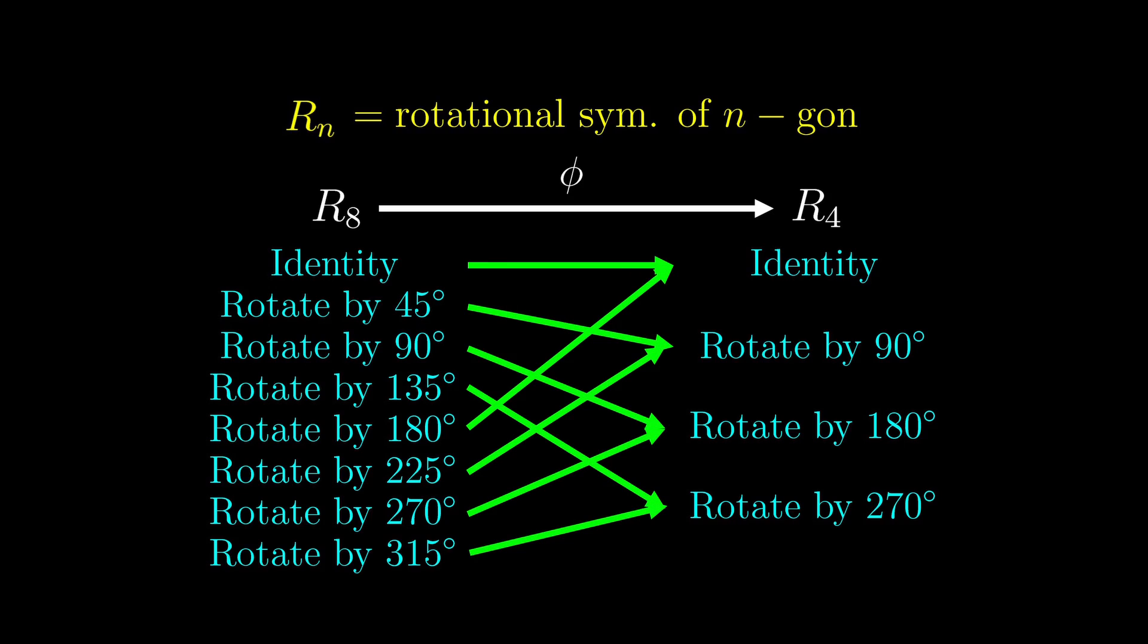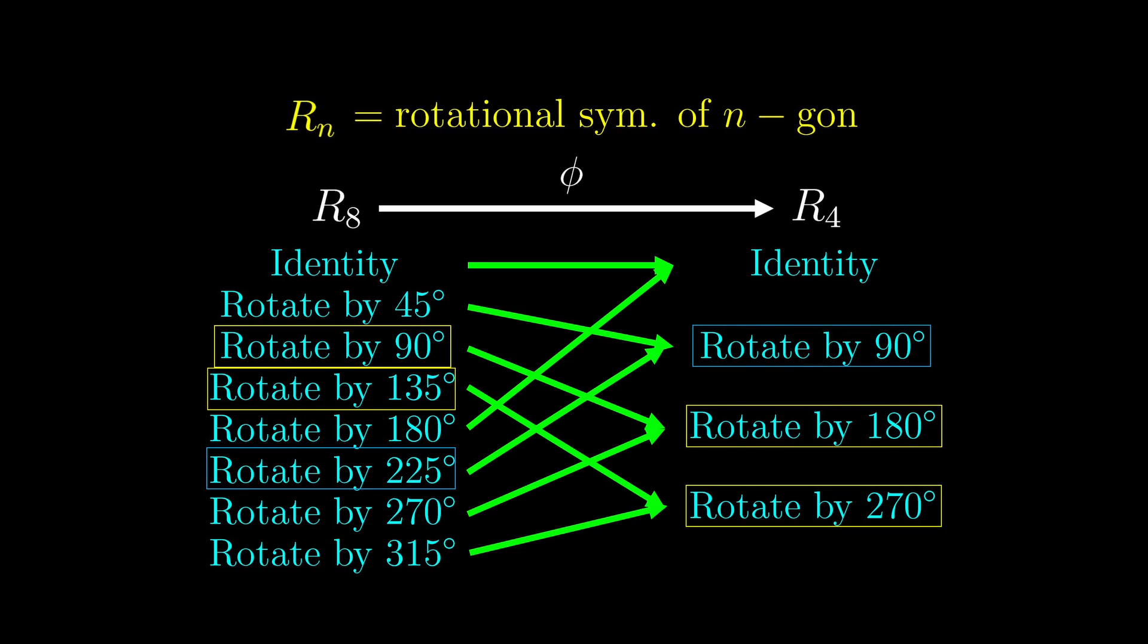Just to convince you that this is indeed a homomorphism, we consider this particular pair of symmetries. The result of these two symmetries should be a rotation by 225 degrees. Now apply the function phi to all the symmetries involved. We can verify that the result of the two yellow symmetries on the right does give us the blue symmetry, because a combination of 180 degree and 270 degree rotations does give a 90 degree rotation.